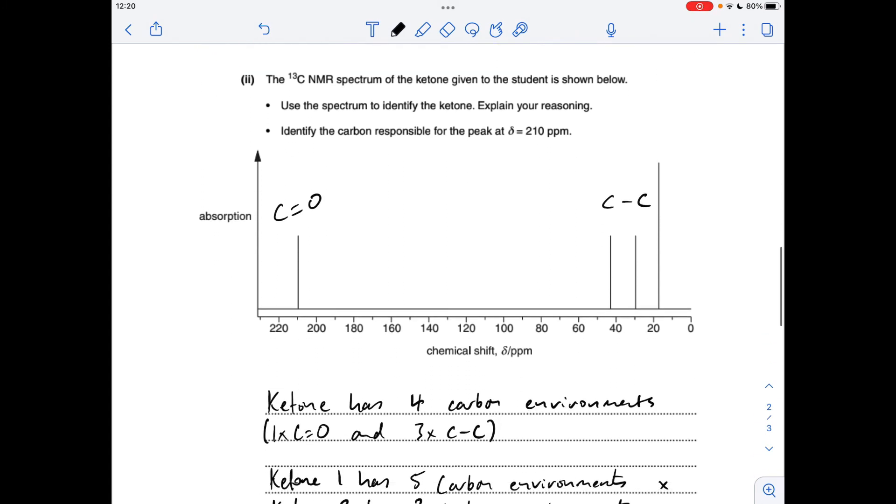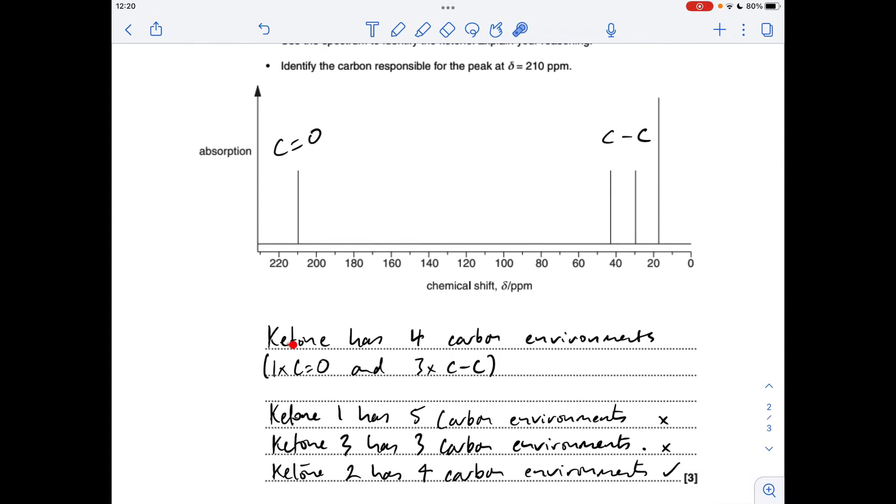And then how have I phrased my answer? I've just said the ketone has got four carbon environments, one C double bond O, three CCs, and then just run through the three ketones.